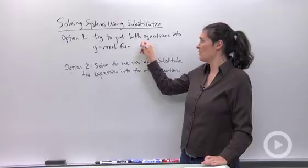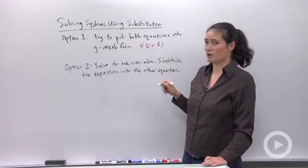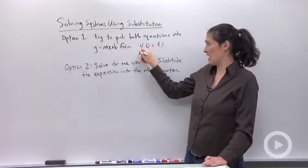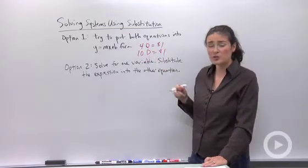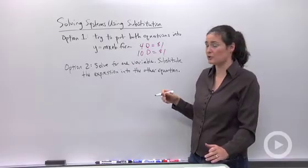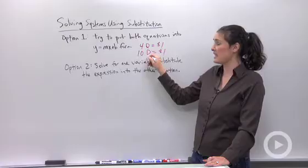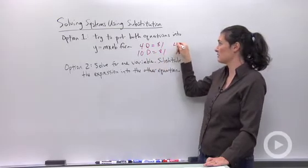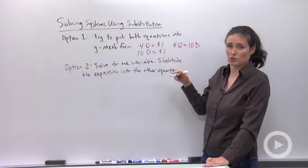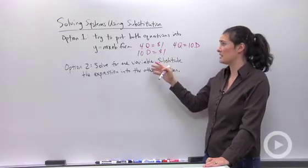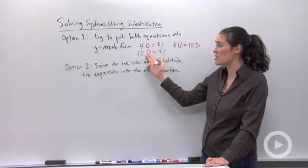It's kind of like this idea: you guys know that in the United States four quarters is equal to one dollar, right? I could also say ten dimes is equal to a dollar. So what this process is doing using substitution, you're going to write something along the lines of four quarters is equal to ten dimes. It's the substitution piece where these two expressions become equal to each other if they're both equal to y.